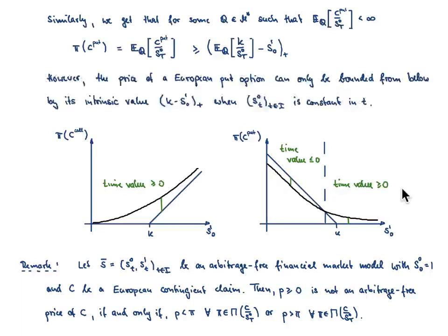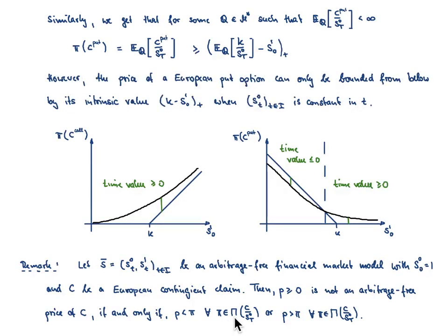So let us add a remark: whenever you have a financial market model which is arbitrage-free, the numeraire starts at one, and you have a European contingent claim C, then a value p > 0 is not an arbitrage price of C if and only if either p is less than π for any π taken from the set of all discounted arbitrage-free prices, or p is strictly larger than π for all π taken from the set of all discounted arbitrage-free prices.